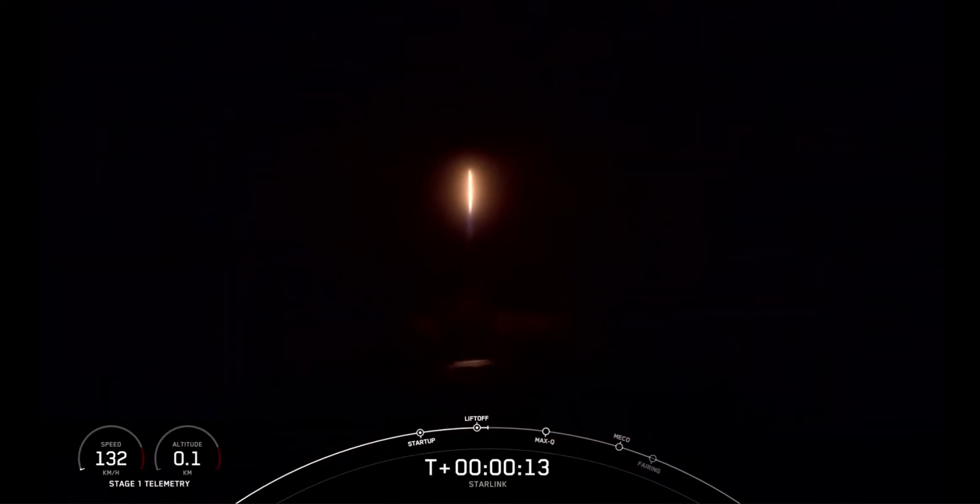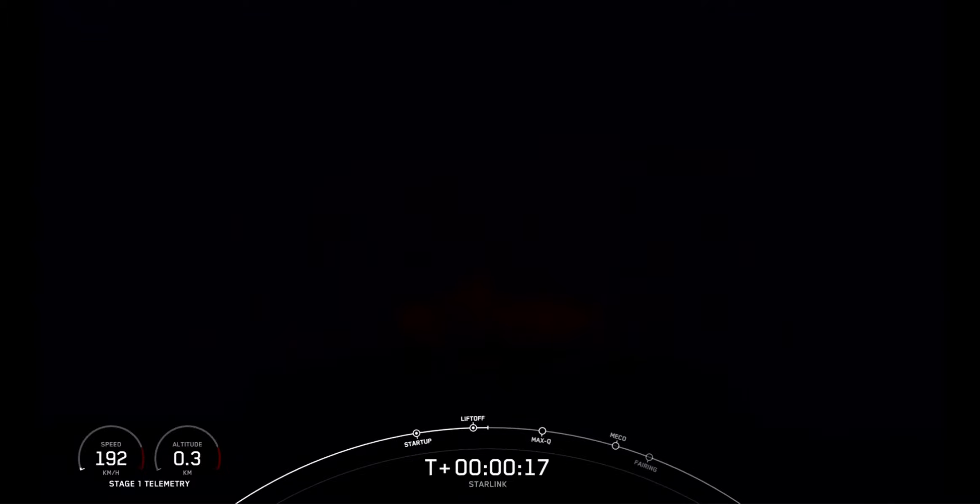The vehicle is pitching downrange. Stage 1 chamber pressure is nominal. T-plus 40 seconds into flight. It is dark, but we can definitely hear Falcon 9. We have successfully lifted off from pad 39A at Kennedy Space Center, carrying our stack of Starlink satellites into orbit. Right now, we're currently throttling down the engines in preparation for Max-Q. That is the period of maximum aerodynamic pressure where we'll experience the largest structural load on the vehicle during ascent. So slowing the vehicle down helps during this period.